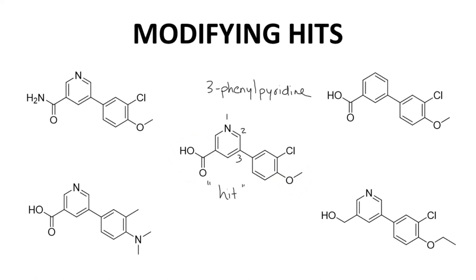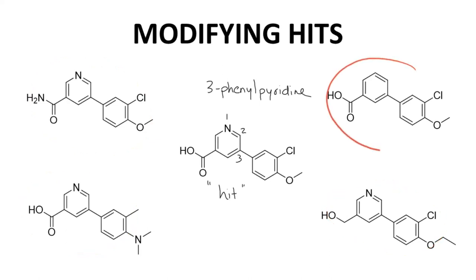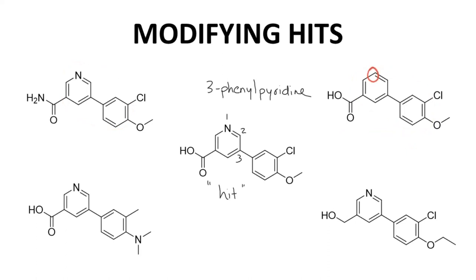Based on this hit, other compounds may be synthesized to better understand what features are required for target binding. The new compounds may have the same scaffold or a different scaffold. Note that the structure in the upper right is missing the ring nitrogen and has a biphenyl scaffold. The collection of compounds represents a hit series, so our hit has grown from a single molecule to a series of related compounds.